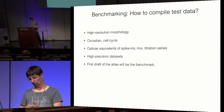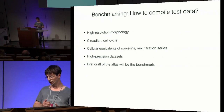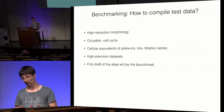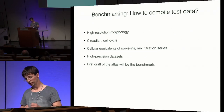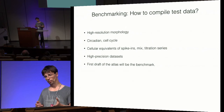We could also benchmark by high-resolution morphology, comparing our findings to other methods. Another suggestion was using circadian or oscillating genes as validation. We could create high-precision data sets using single-molecule FISH to validate expression levels. Finally, the Human Cell Atlas is a work in progress — we should start with a limited version, benchmark on different tissues and methods, and iteratively build a bigger atlas with better resolution and better methods.